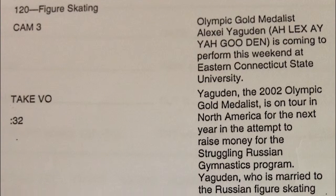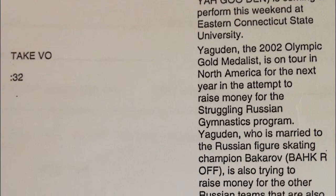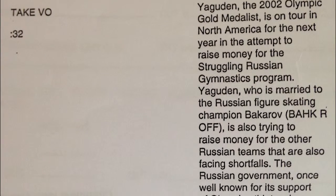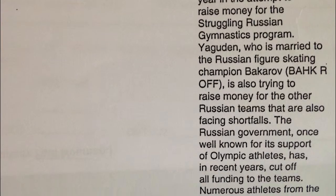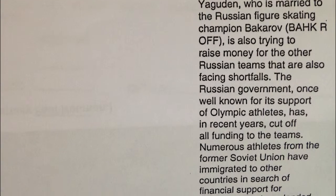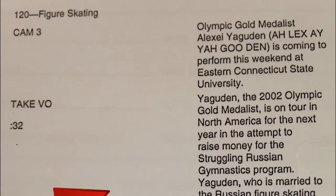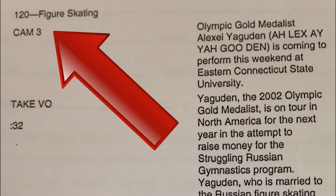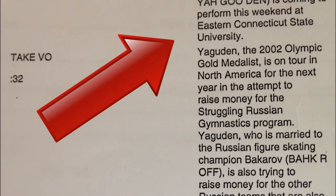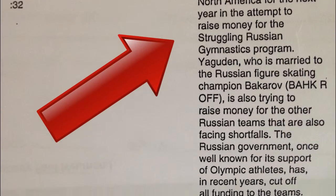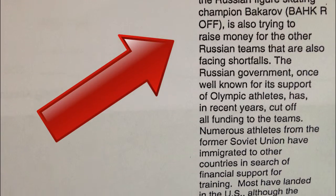Another important component of TV production is scripting. The standard format for news is a two-column script. The first column indicates production information, and the second column includes the actual script — what the anchors will say.